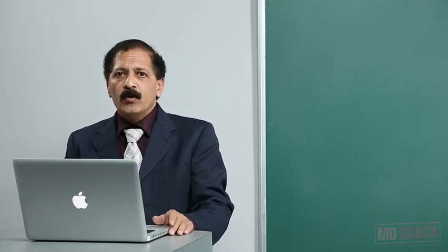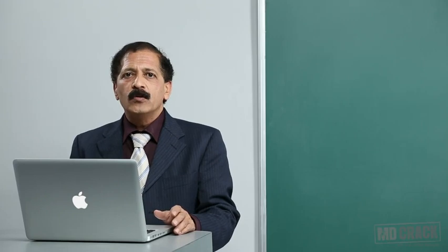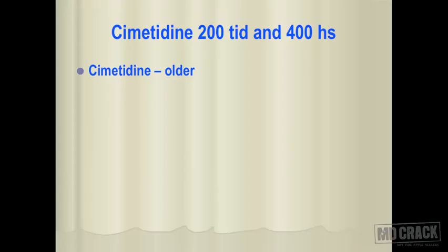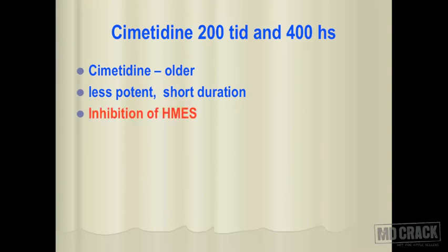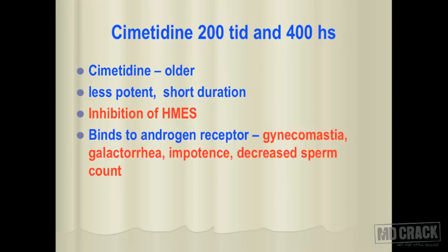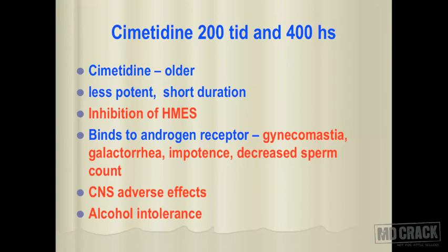Cimetidine was an older H2 blocker, now outdated. It was used in a dose of 200 mg three times a day and 400 mg at bedtime for peptic ulcer. It was less potent with short duration of effect. It inhibited hepatic microsomal enzymes — the cytochrome P450 system — making it an important example of an enzyme inhibitor. It bound to androgen receptors causing sexual adverse effects like gynecomastia, galactorrhea, impotence and decreased sperm count. It also caused CNS adverse effects and alcohol intolerance — a disulfiram-like effect.